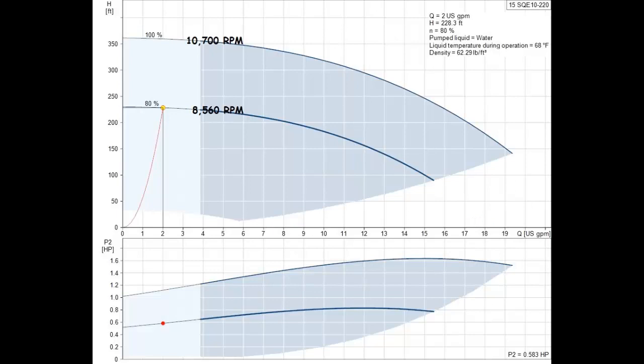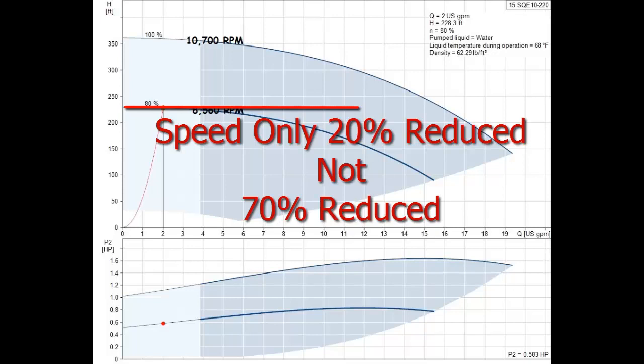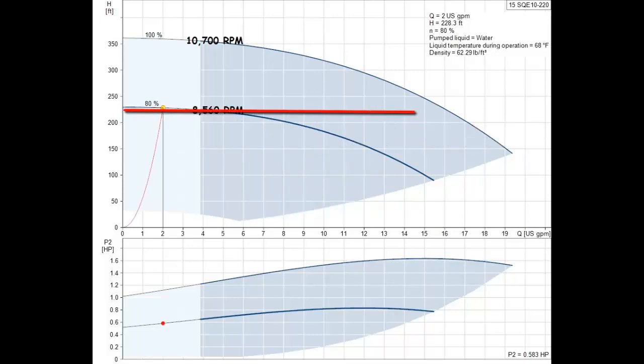The most this pump can be slowed down and still produce the 220 feet of head needed is only 20%, not 70% as many falsely believe. Anything lower than 80% of full speed will not lift water out of the well or produce pressure to the faucets. And since 80% of full speed is the slowest speed possible, reducing energy consumption by the cube of the speed doesn't add up to much.